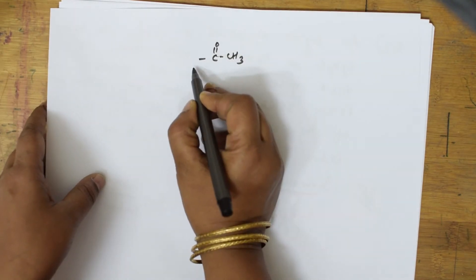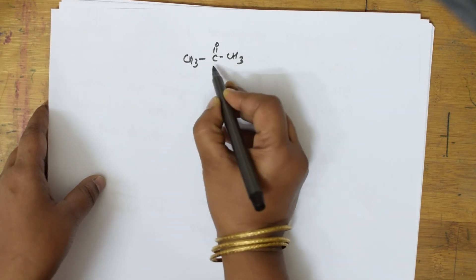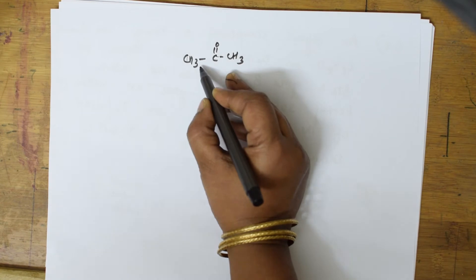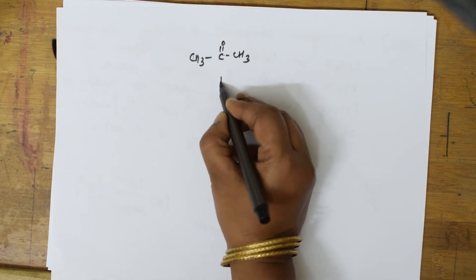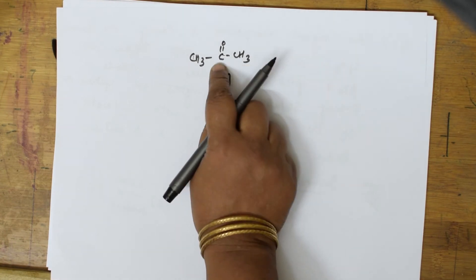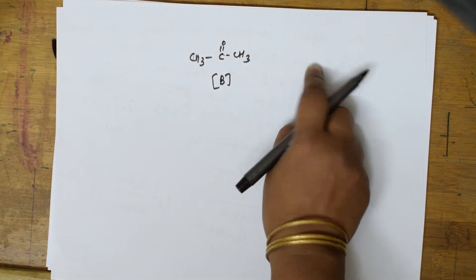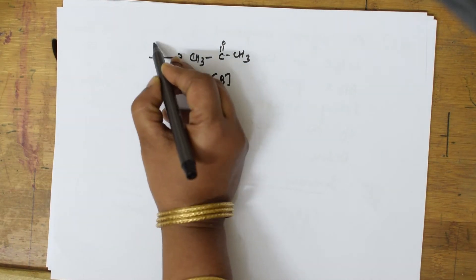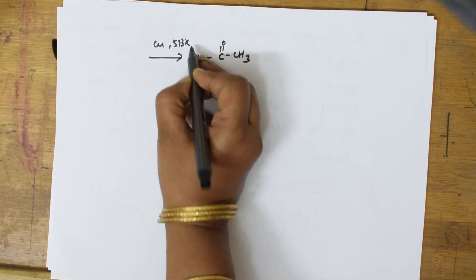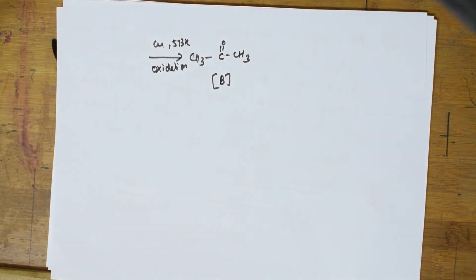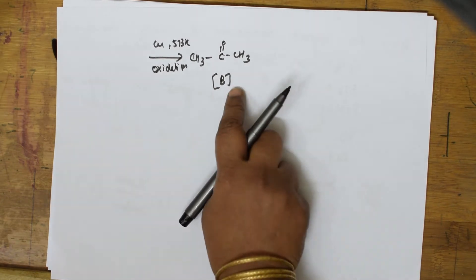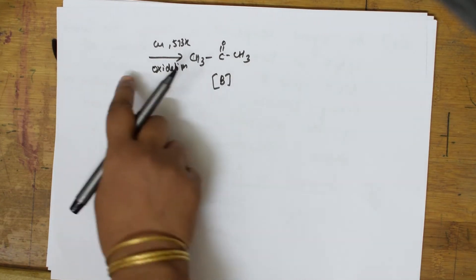C3H8O: C3 accounts for three carbons, and there is only one carbon left after the methyl ketone, so B is CH3-CO-CH3. This is compound B — a methyl ketone undergoing the iodoform reaction. Now go back: A was treated with copper at 573 Kelvin — oxidation — which gives a ketone.